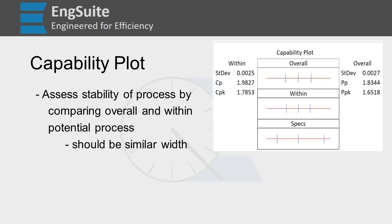Another thing we can use the capability plot for is to assess the stability of our process. This means our overall and within standard deviations and our overall and within process spreads should be very similar.